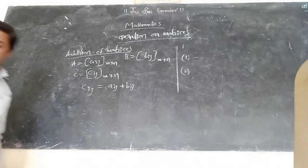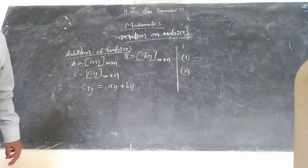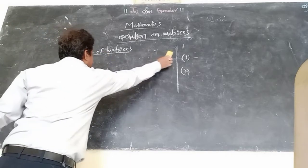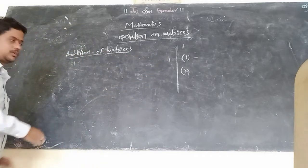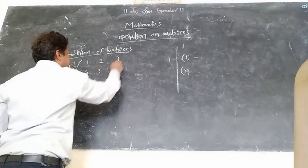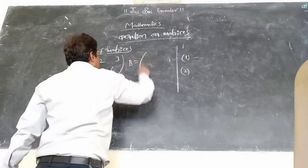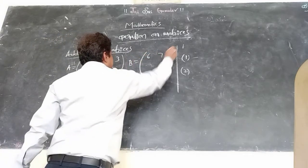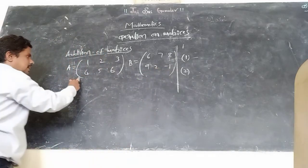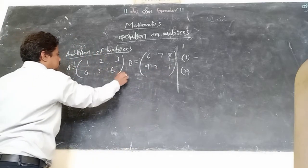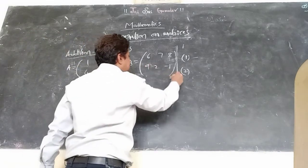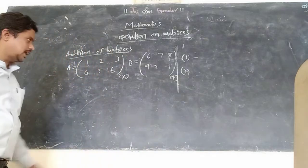By using one example we can explain how it will be executed. Let A equal to [1, 2, 3; 4, 5, 6] and B equal to [6, 7, 8; 9, 2, -1]. Here, what is the order? Two rows and three columns. Here also two rows and three columns. The order is the same, so we can proceed.